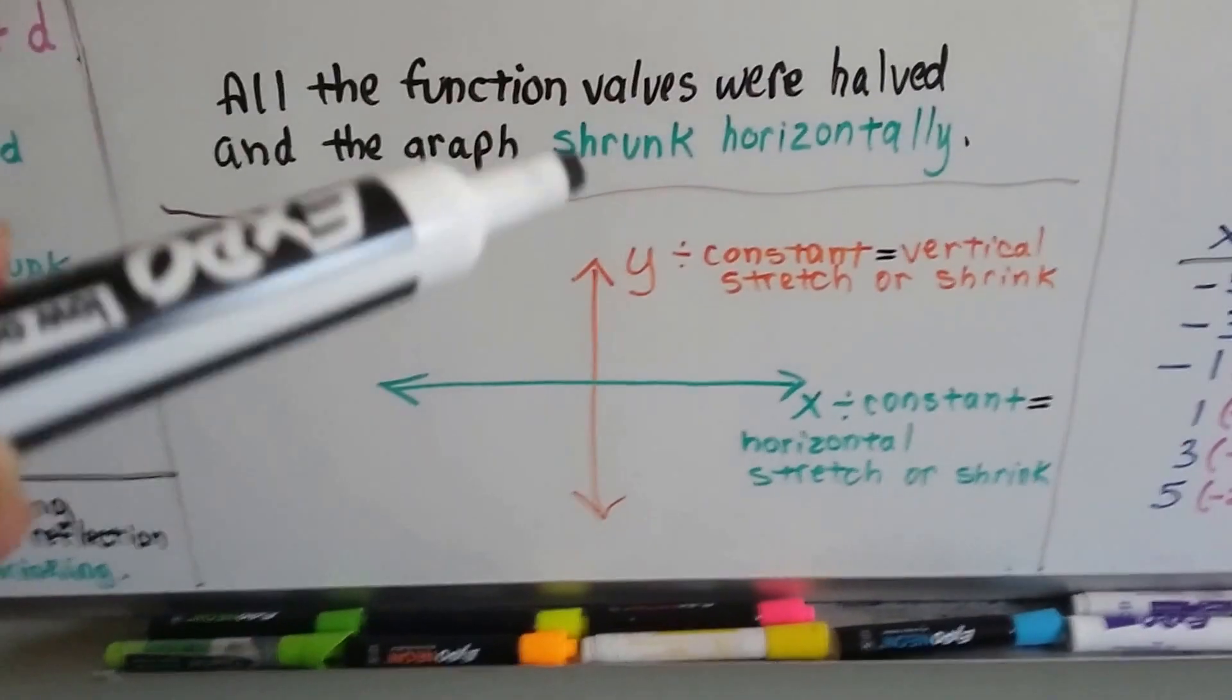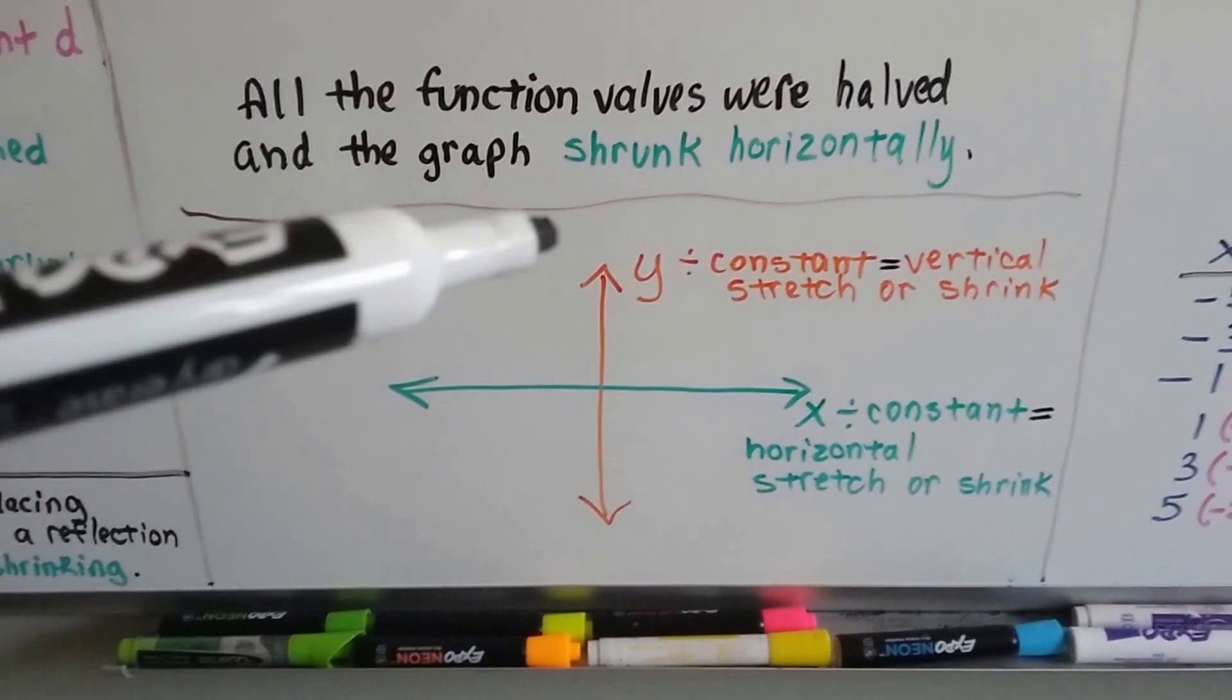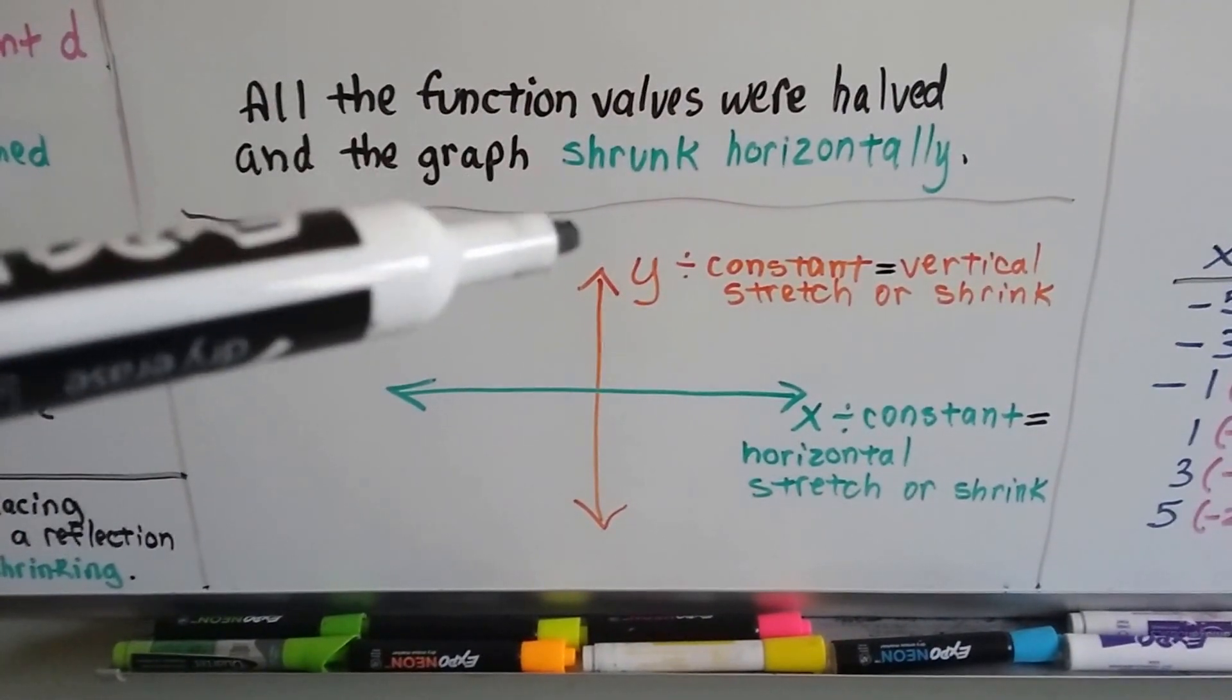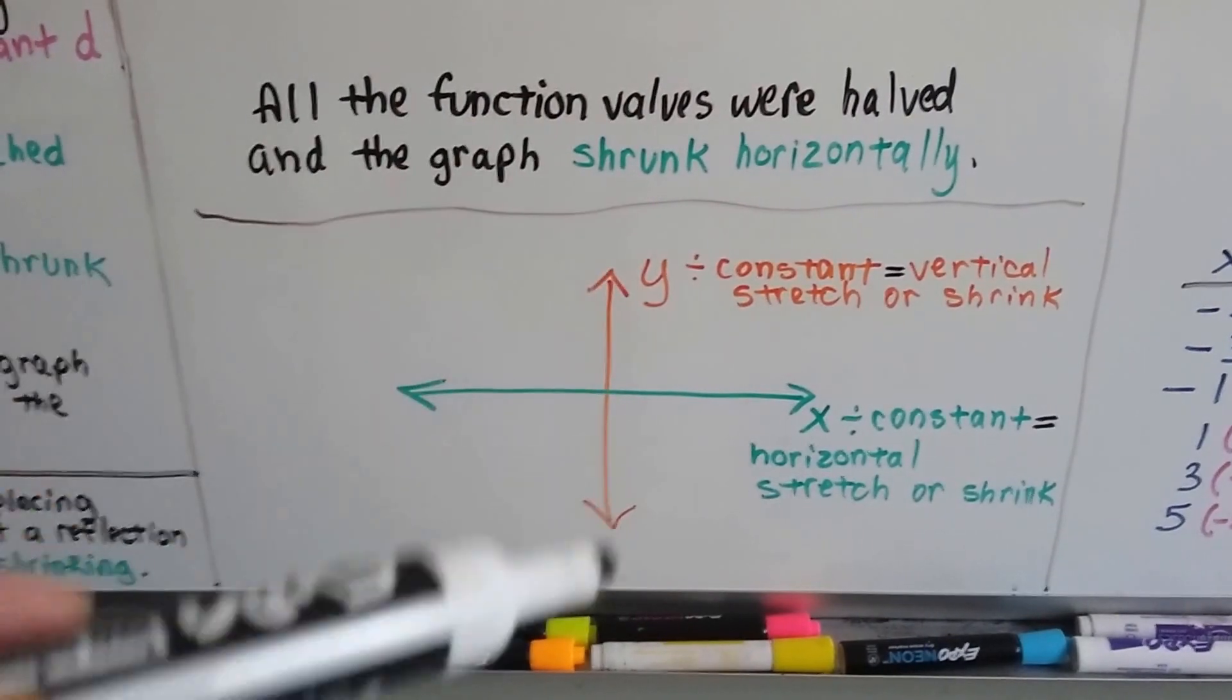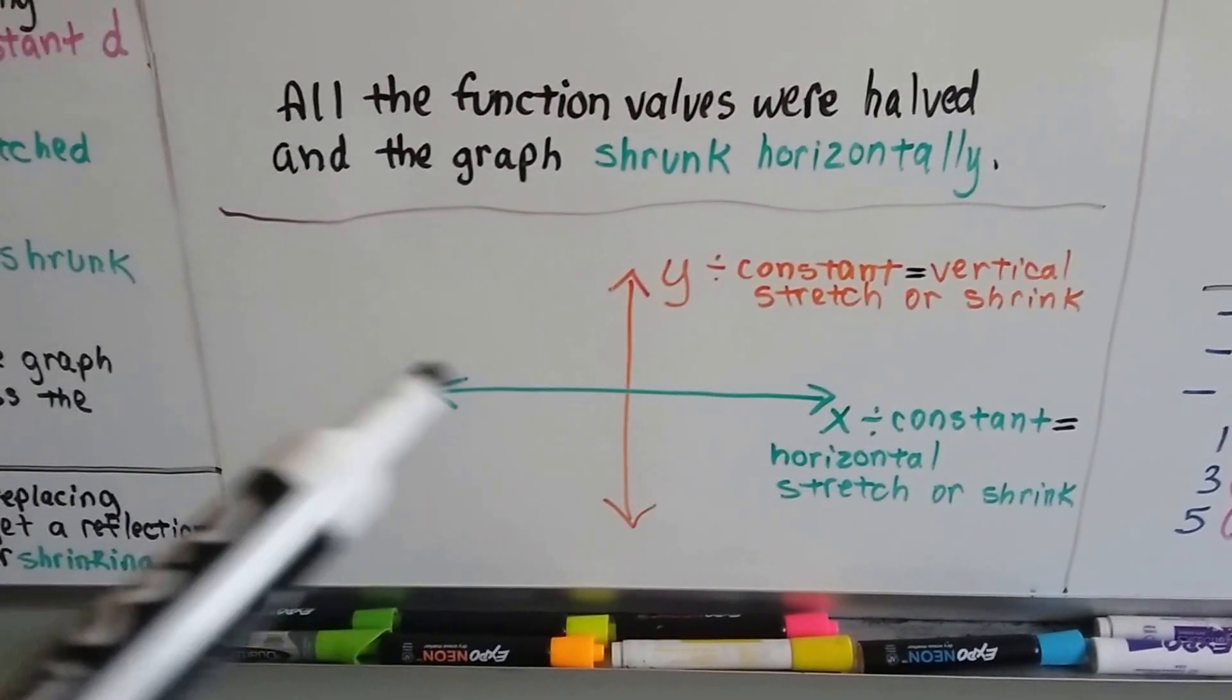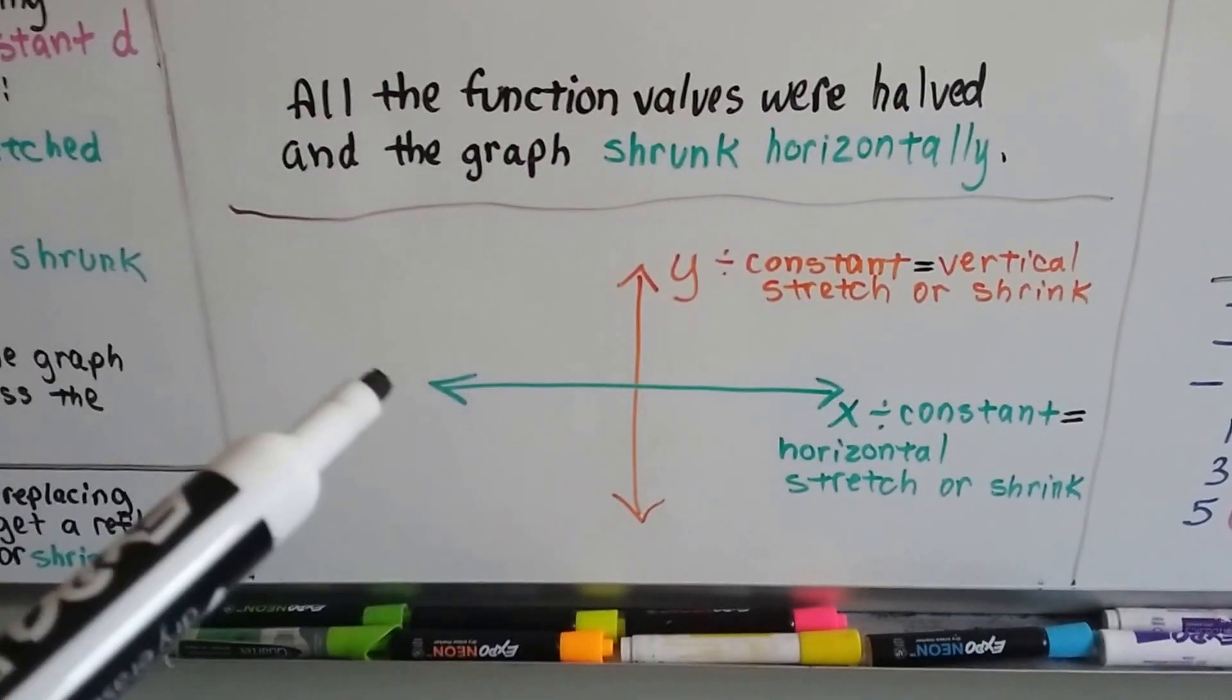So here's y, and here's x. If you divide y by the constant, it's going to stretch or shrink vertically. But if x is divided by the constant, it's going to stretch or shrink horizontally.